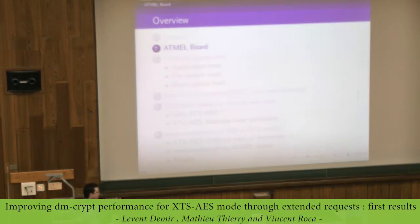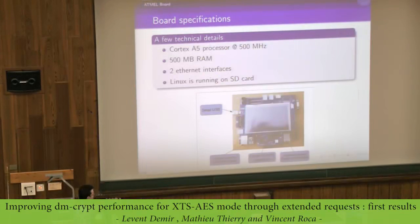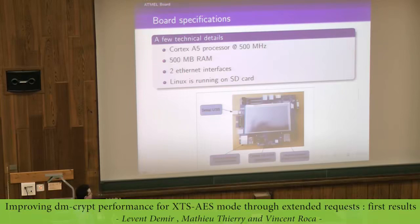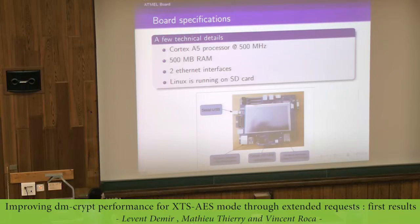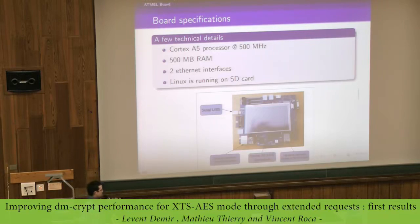Now we will see this module. This is, for example, an Atmel board — just to show how it looks. We have two Ethernet interfaces: one going to the client and one going to the cloud. This board has a Cortex-R5 ARM processor and Linux running on an SD card. For this presentation, we will focus on encryption on this board and forget the client and the cloud for now — everything is done locally inside the SD card.